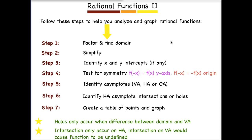Step one: factor. And remember, you find the domain immediately after you factor, before you simplify. If you happen to simplify first, you will miss finding part of the numbers that are excluded from your domain. Then step two, you'll simplify. Step three, that's where you identify your X and Y intercepts — to help get more points on the graph, and to help identify any asymptote intersections in step six.